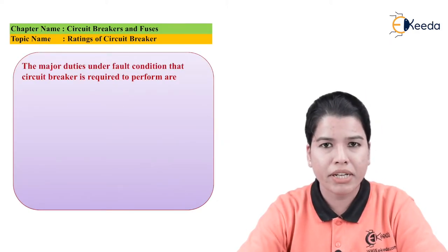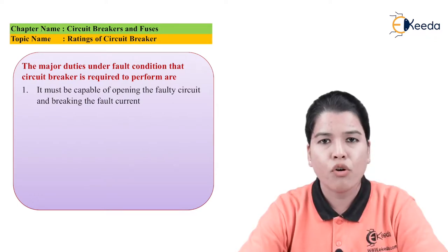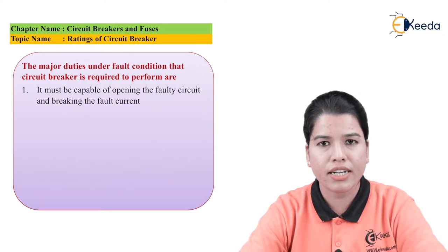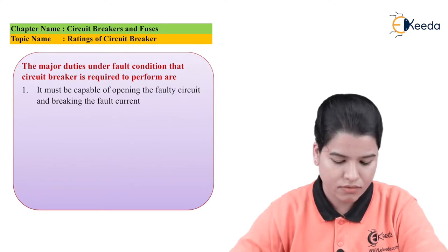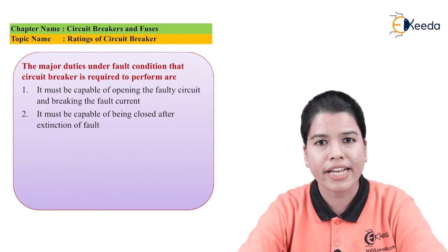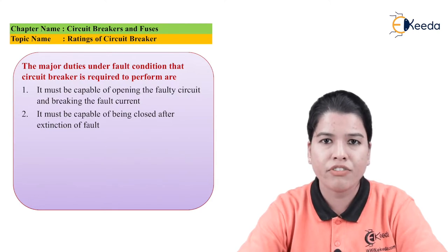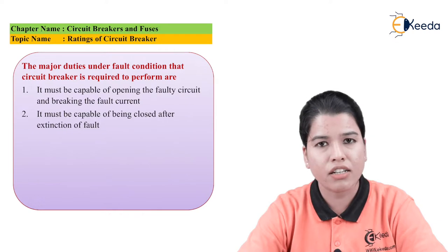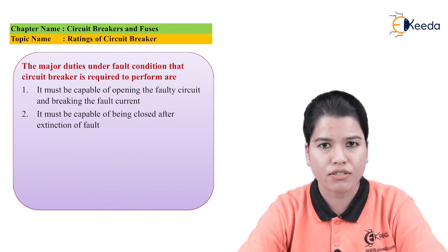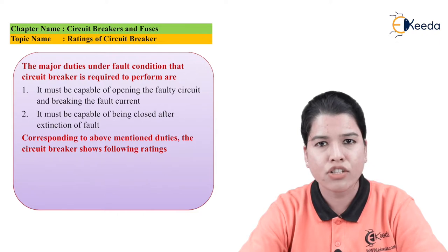The major duties that a circuit breaker must perform under fault conditions are: first, it should be capable of opening under fault conditions to interrupt the supply and disconnect the faulty part of the system from the healthy part. Second, it should be able to close when the fault has been finally extinguished, so that supply to the consumer is not interrupted. Corresponding to these duties, there are certain ratings of the circuit breaker.